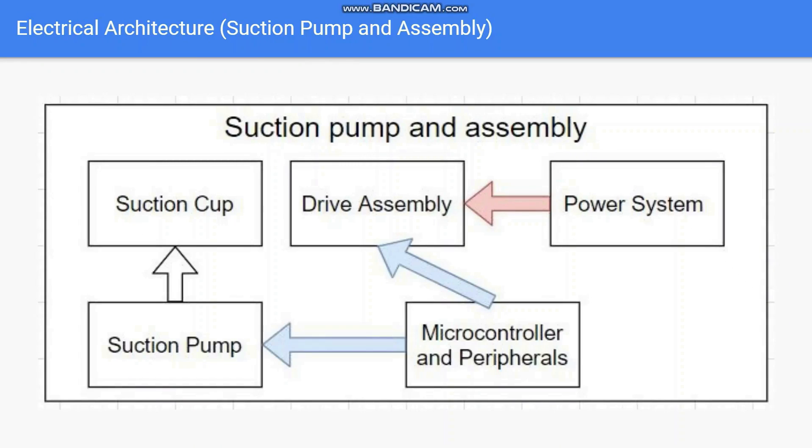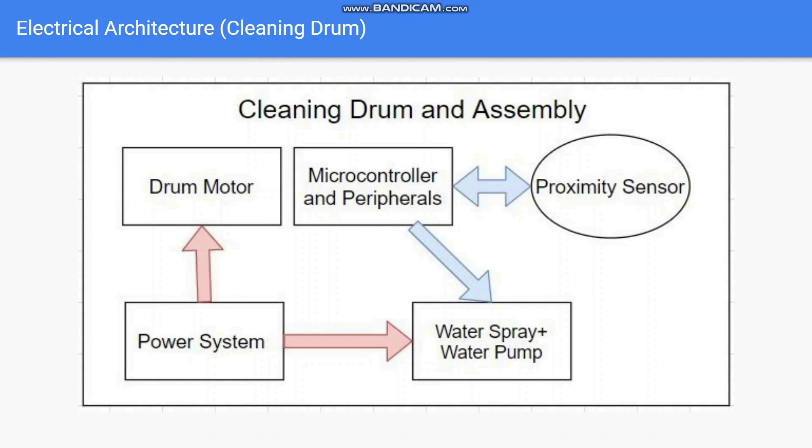The electrical architecture of the total robot can be broadly divided in electrical architecture for suction pump and assembly and cleaning assembly. The suction pump provides the vacuum required by suction cup by taking input from the microcontroller and its peripherals. At the same time, a control signal is provided to drive assembly for the motion of the entire system. So, in this manner motion is given to the entire robot assembly. The microcontroller provides a control signal to the water pump based upon the inputs received from the proximity sensor. The power system provides the power input to drum motor, water pump and microcontroller. So, in this way, the sub-assembly operates to clean the wall.